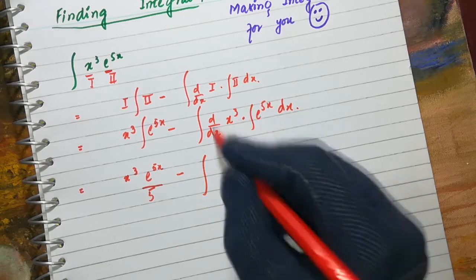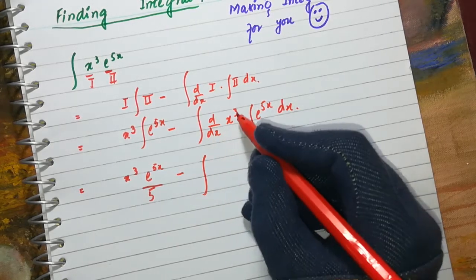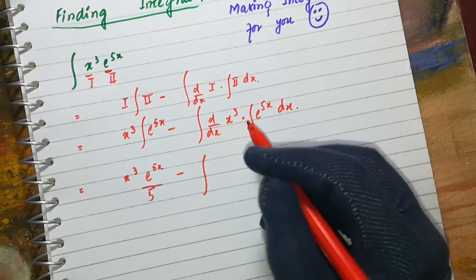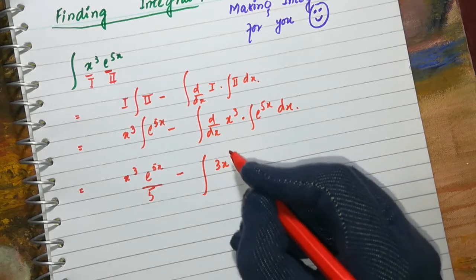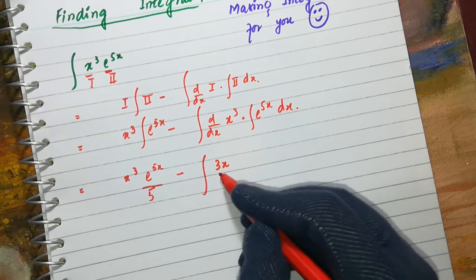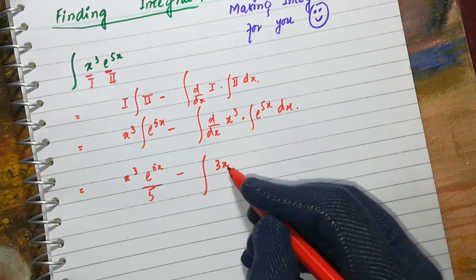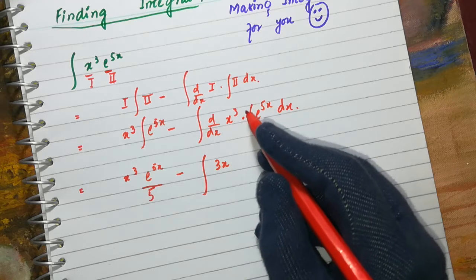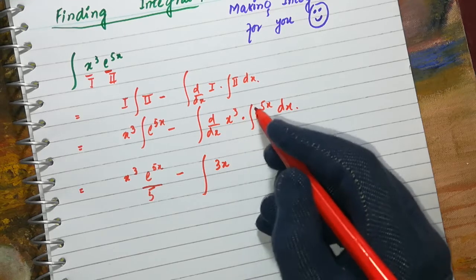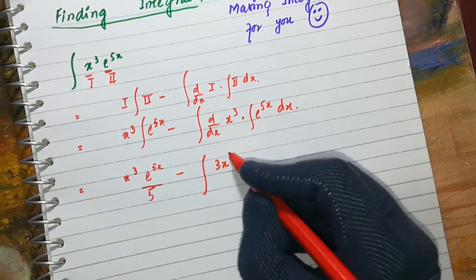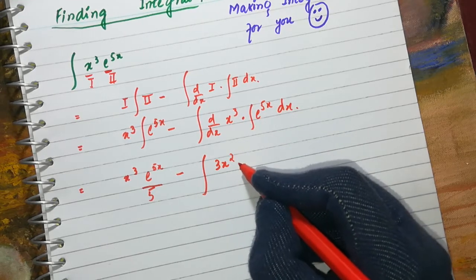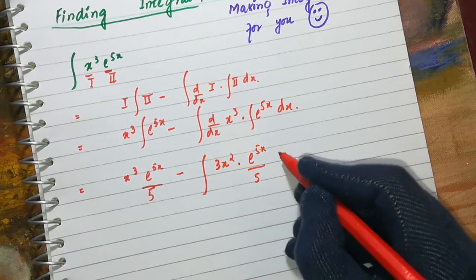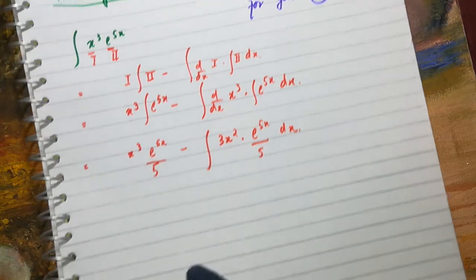Then we subtract the integration part, where the derivative of x³ uses the power rule: bring the power to the front, keep the variable, and reduce the power by one — giving 3x². So we get 3x² times the integral of e^(5x) over 5, dx.